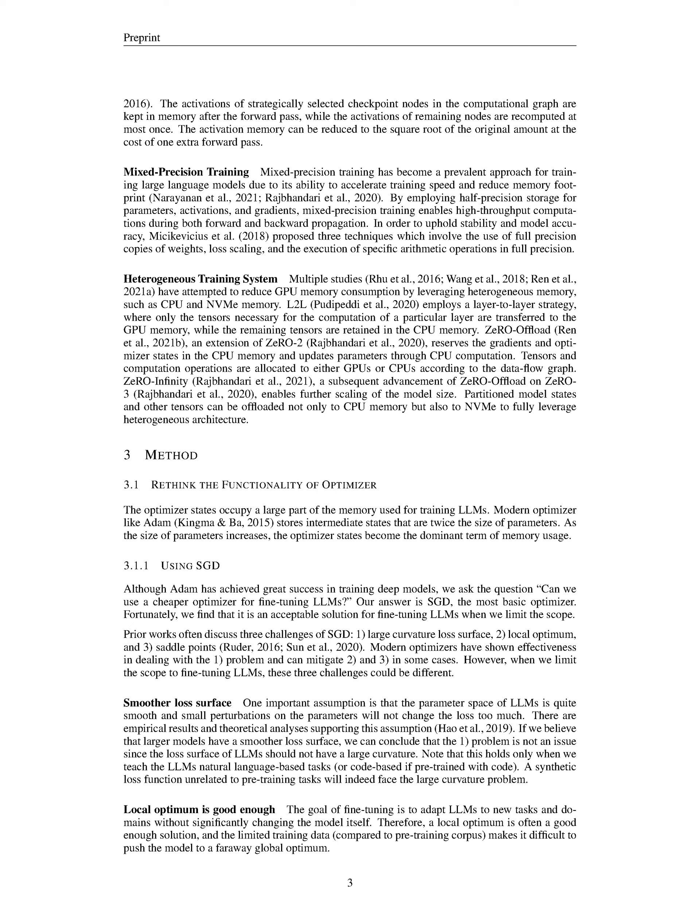An alternative approach would be to discard all activations and recreate them as needed for gradient computation, thereby conserving memory. However, this could significantly increase the computation expense. That's where activation checkpointing, or gradient checkpointing, comes into play, balancing memory usage and computation costs. It operates by storing the activations of strategically chosen checkpoint nodes in the computational graph after the forward pass, while the activations of other nodes are re-computed at most once.